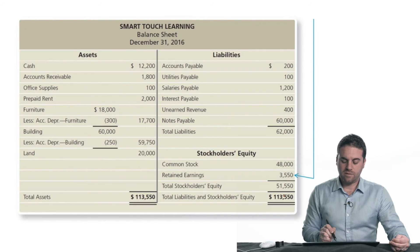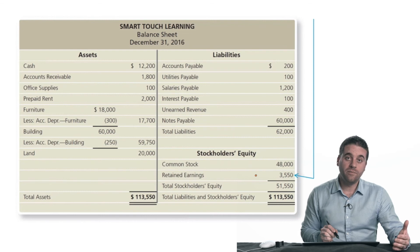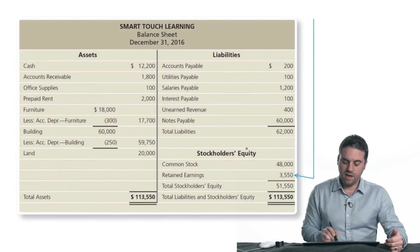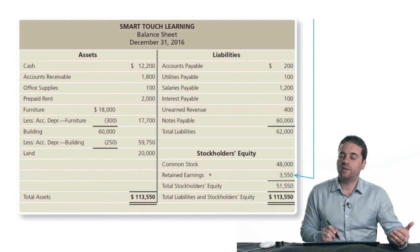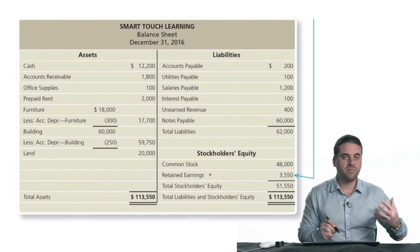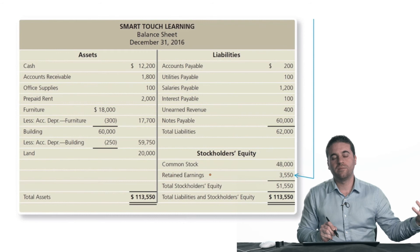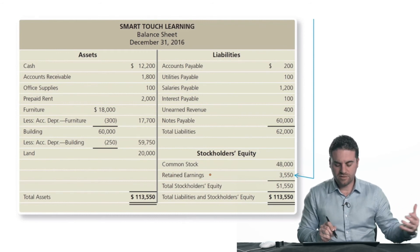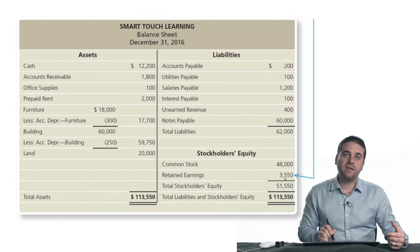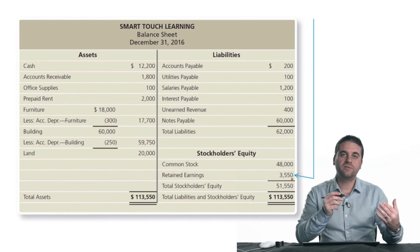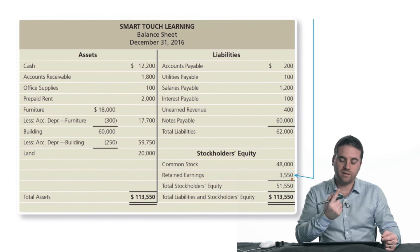Do we see revenues and expenses in the balance sheet? No — they are not balance sheet accounts. However, they do reflect indirectly on the balance sheet under the equity side. Under equity we have retained earnings, and where did retained earnings come from? It came from net income and dividends. And where did net income come from? It came from revenues minus expenses. So the retained earnings balance of $3,550 shows the net balance of net income minus dividends — revenues, expenses, and dividends all combined into that one balance.